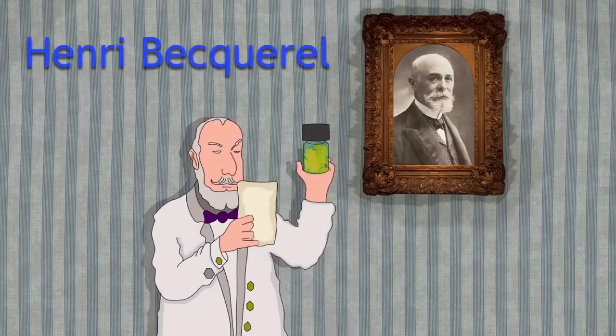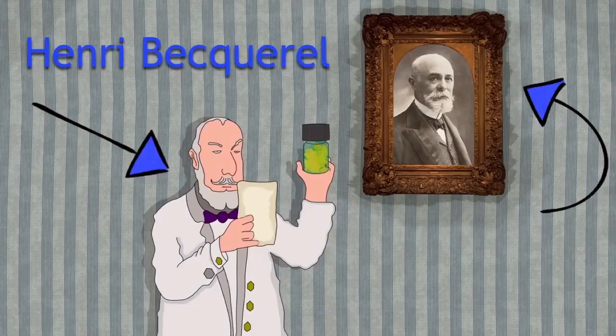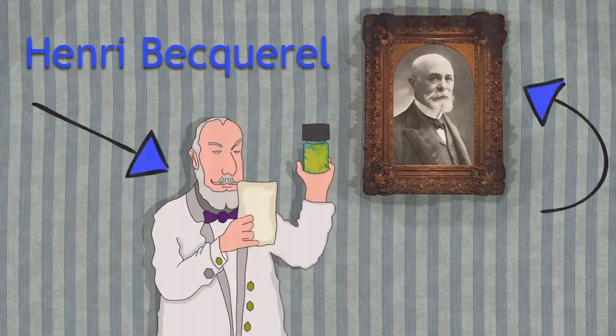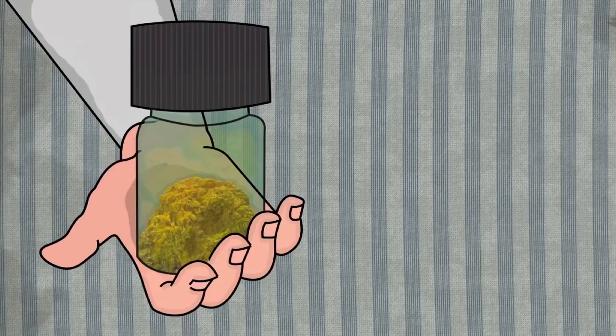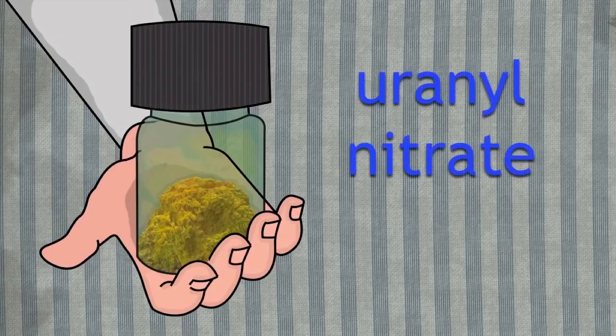In 1895, Henri Becquerel, he's the man with the moustache, discovered that rocks of uranium affected photographic paper. This is the rock of uranium that he looked at, and it's called uranyl nitrate.